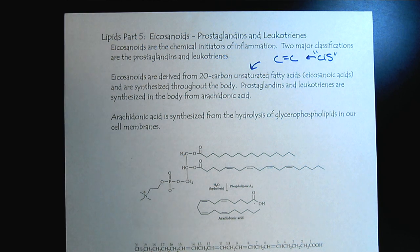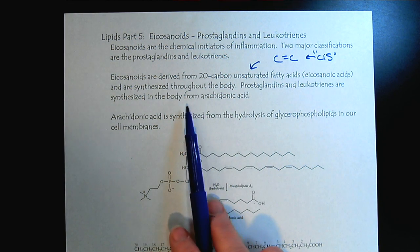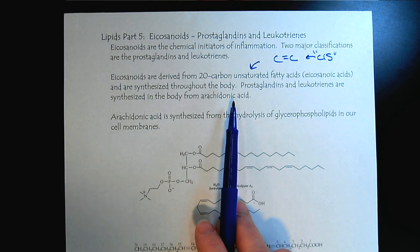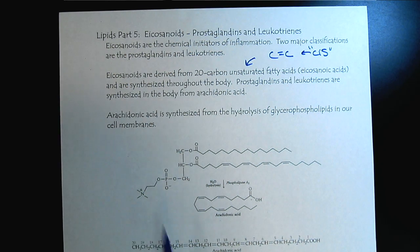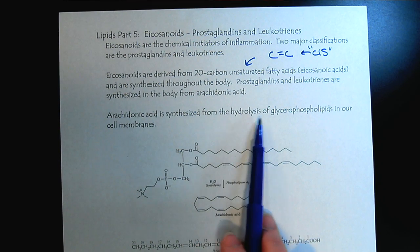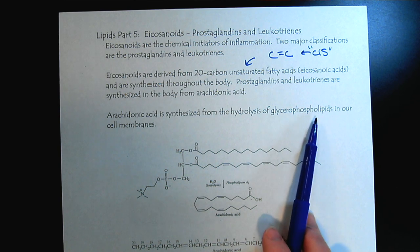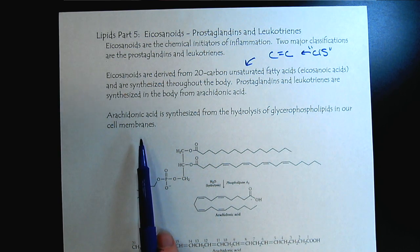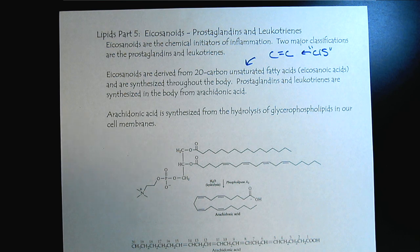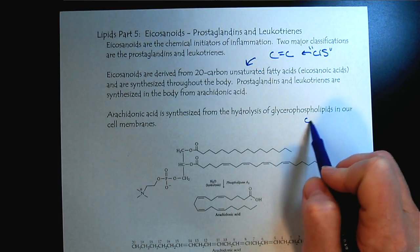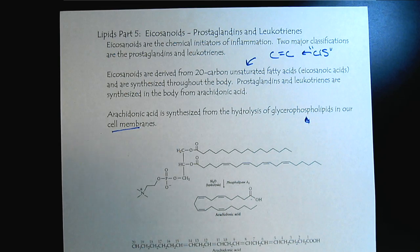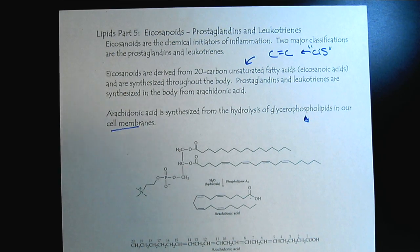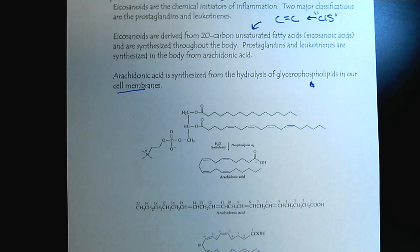The prostaglandins and leukotrienes are synthesized from arachidonic acid. I think this is really fascinating. Our bodies are so efficient that the arachidonic acid is synthesized from the hydrolysis of glycerophospholipids in our cell membranes. That way, we have this chemical resource available in every single cell. We recognize that phospholipids are part of our cell membranes, so we have this immune response ready when we need it. The tricky part is that it's been triggered too much lately.